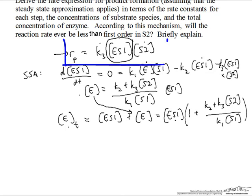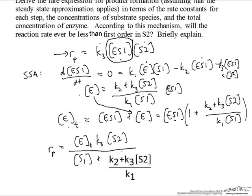We'll combine that top most equation with the bottom equation to solve for the rate of formation of product. We get an expression that looks a lot like a Michaelis-Menten type expression. We have a total enzyme in the numerator, we have K3, we have both of the substrates in the numerator.